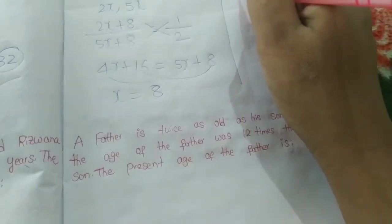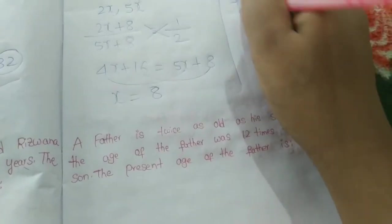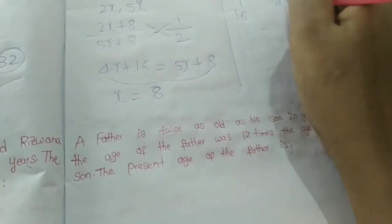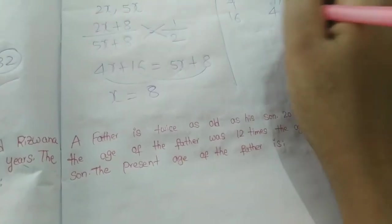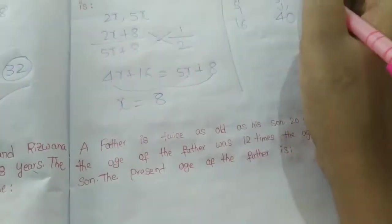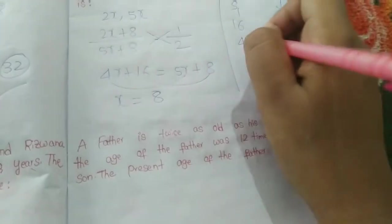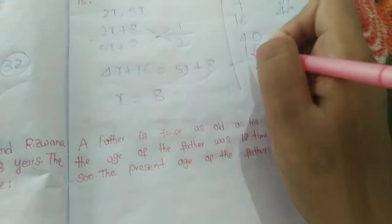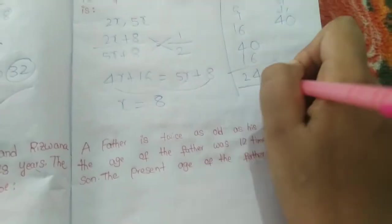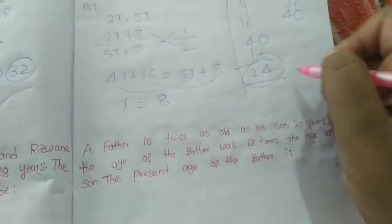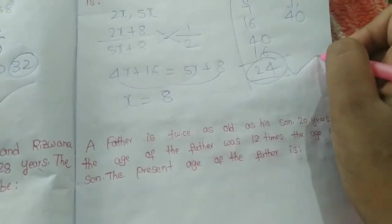Sunny's age is 2 times 8 equals 16, and Siddha's age is 5 times 8 equals 40. The difference in present ages is 40 minus 16 equals 24. The difference in the present ages is 24. Got it? This is our answer.